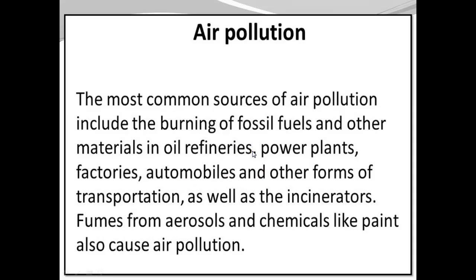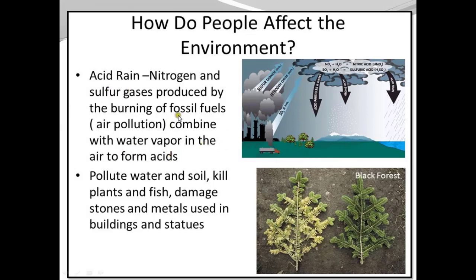Pollution comes from the many things we do in day-to-day activity. Our activities meet our needs but also affect the environment. Acid rain occurs when air pollution mixes with moisture in the atmosphere. Nitrogen and sulfur gases produced by burning fossil fuels combine with water vapor in the air to form acids, which fall to earth as acid rain or snow. Acid rain can pollute water and soil, kill plants and fish, and damage stone and metal used in buildings and statues.